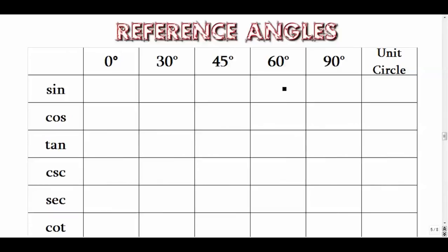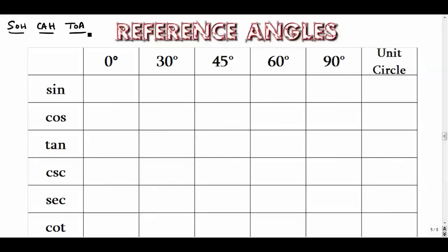Let's talk about the sine, cosine, and tangent values of some basic angles inside of the unit circle. These all come from the basic definitions: sine being opposite over hypotenuse, cosine being adjacent over hypotenuse, and tangent being opposite over adjacent.